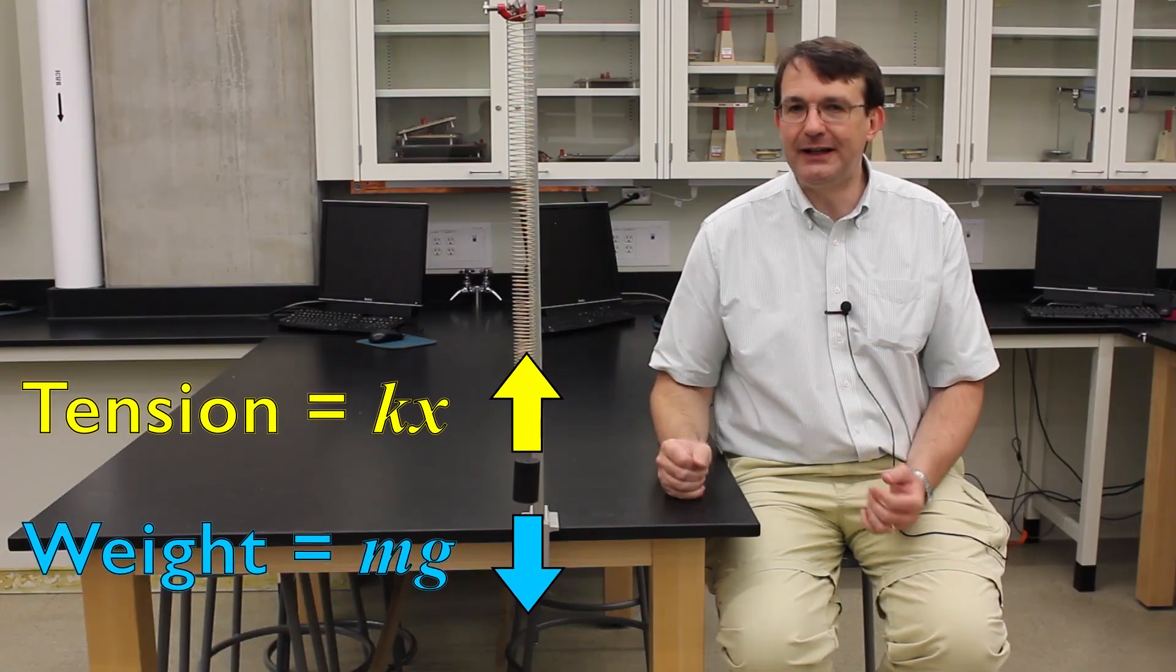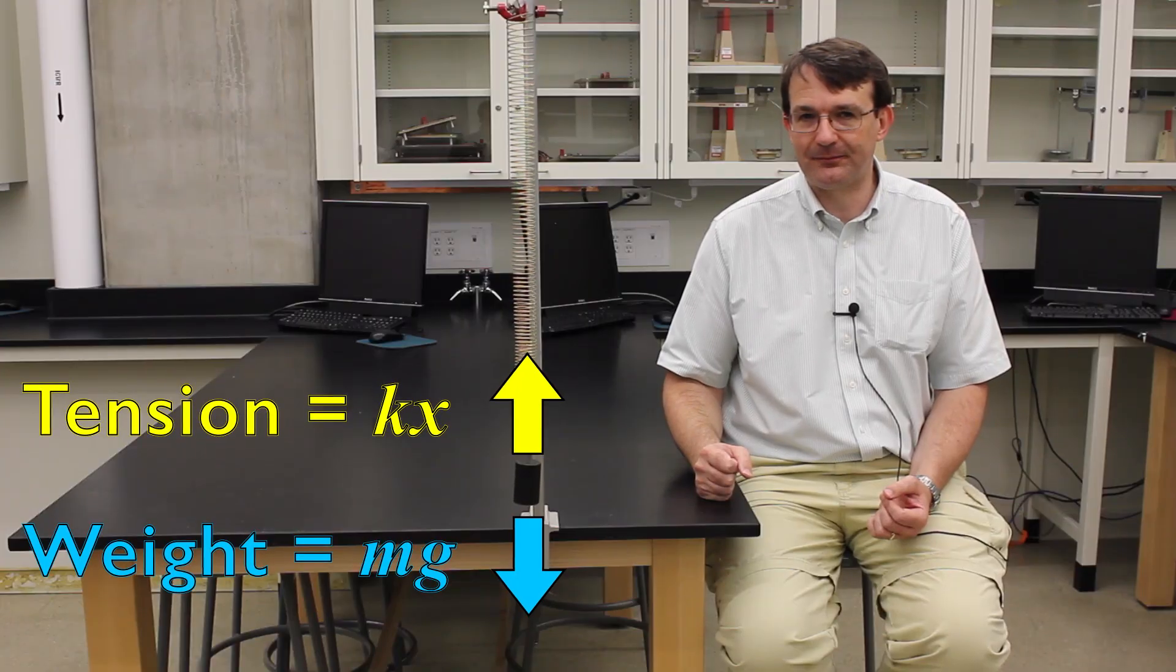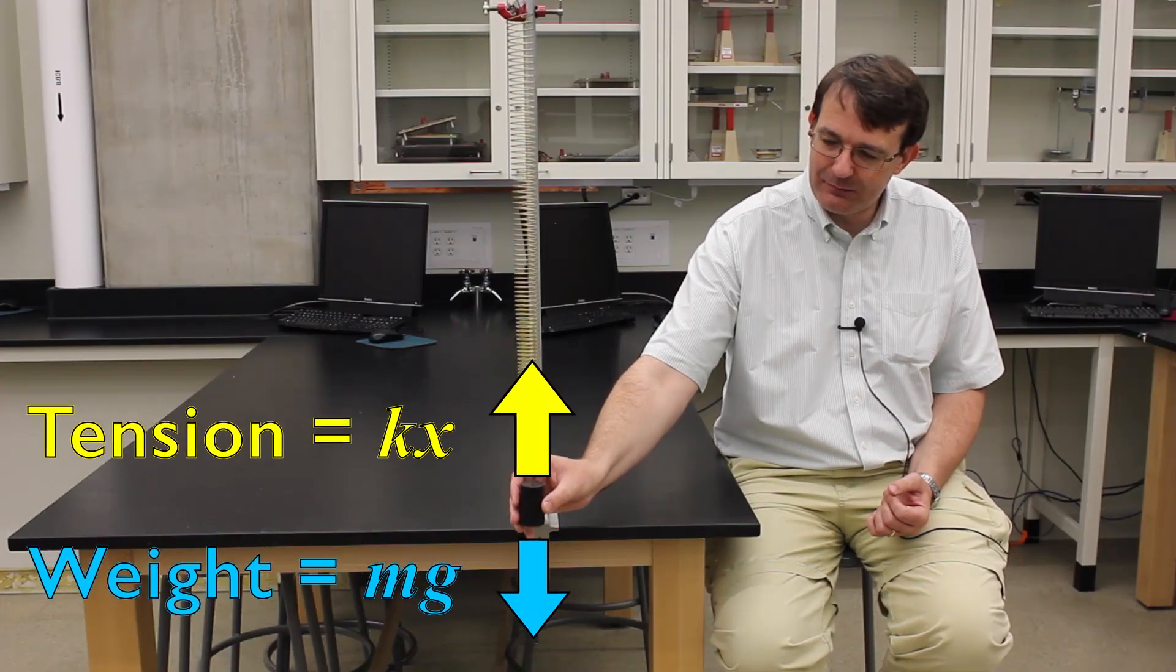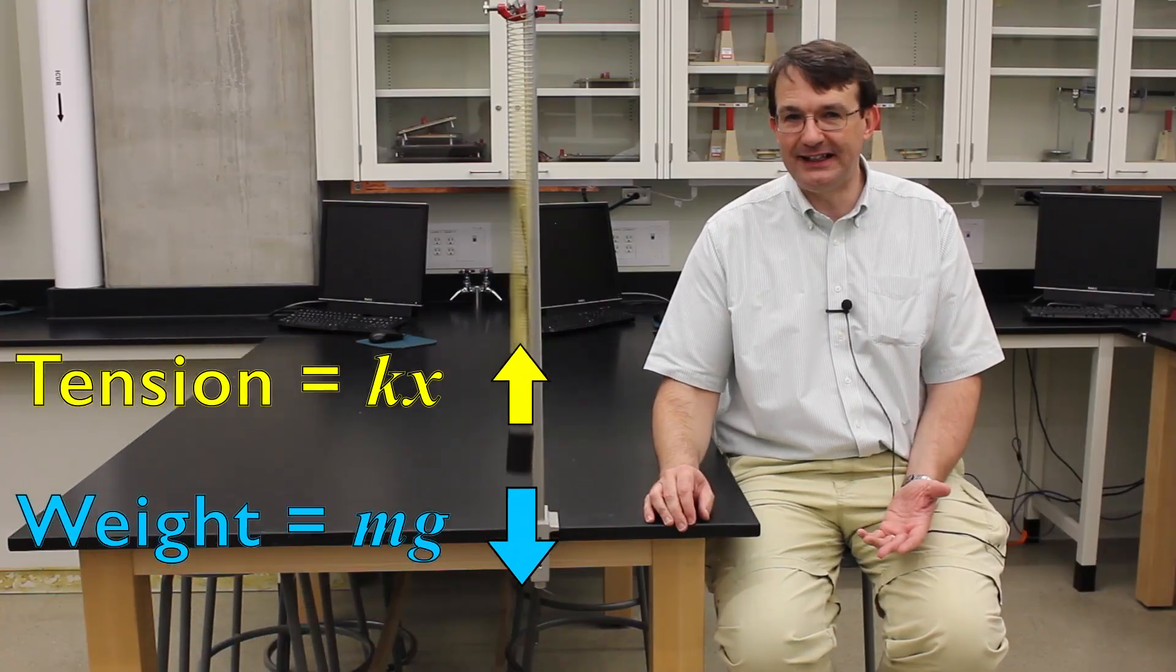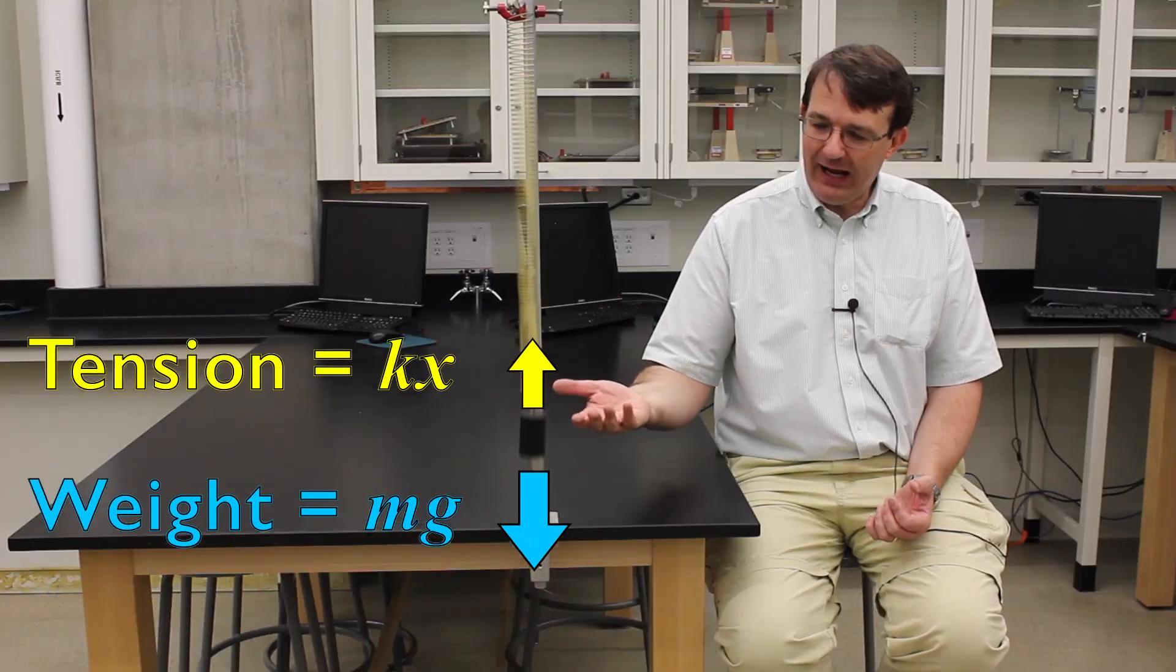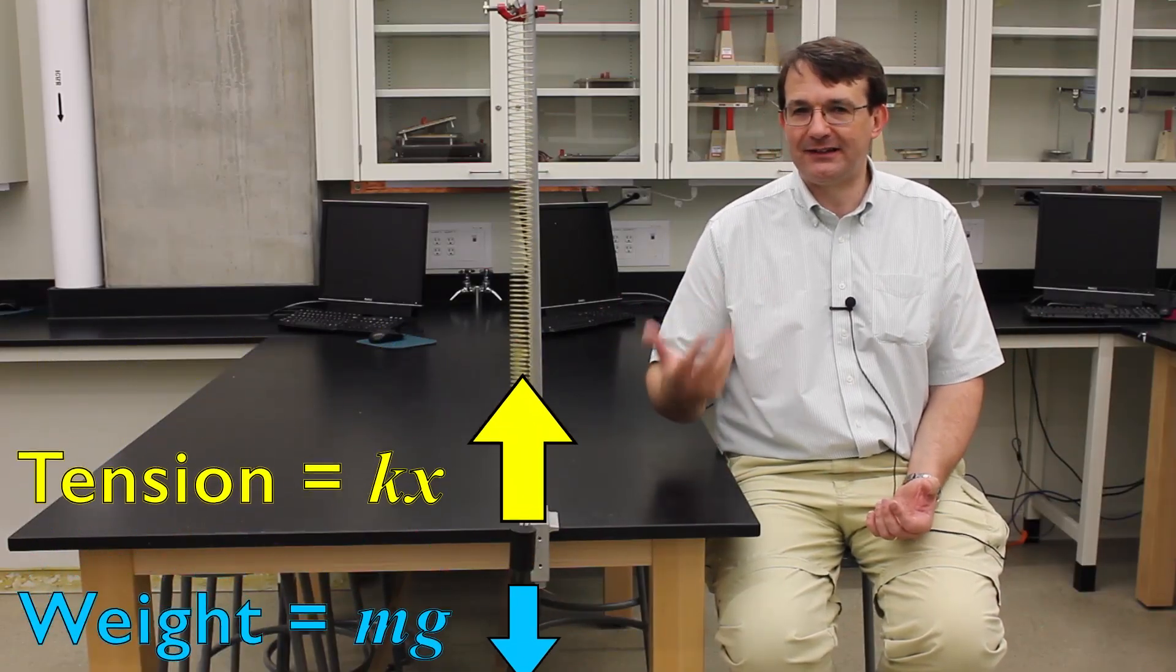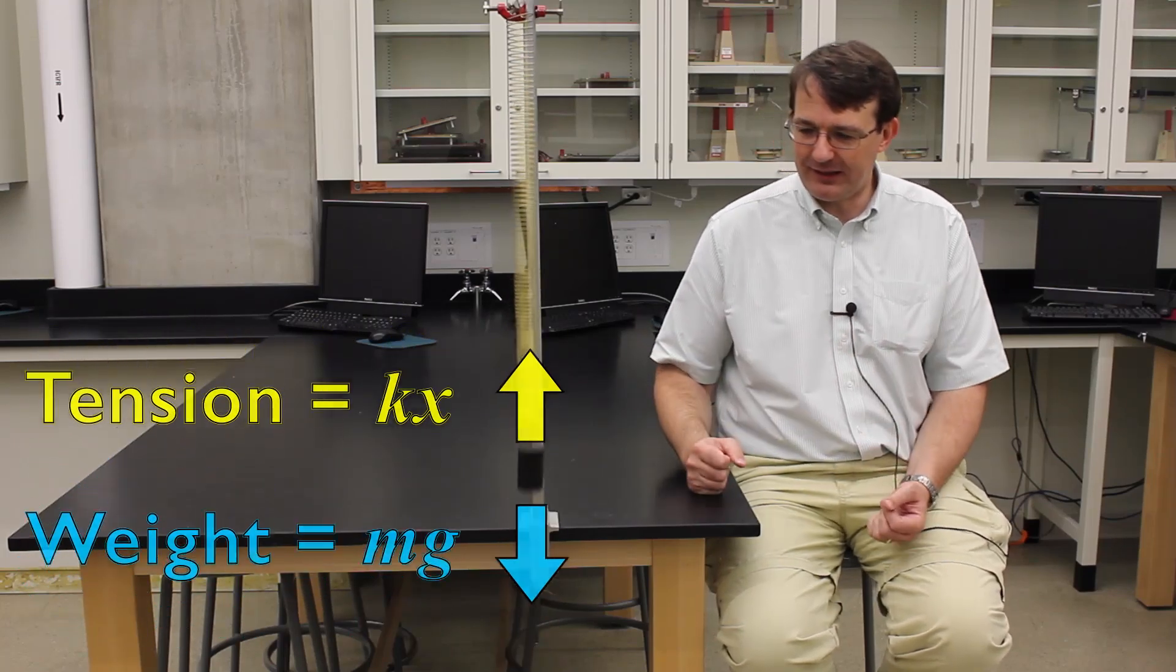So that's all the ingredients we need to have a system which oscillates. So to show it oscillating, let's pull it down and let it go. You can see that the system is oscillating. Now to compare this oscillator to other oscillators, we need to define a system of physical quantities that we can use to describe this motion.